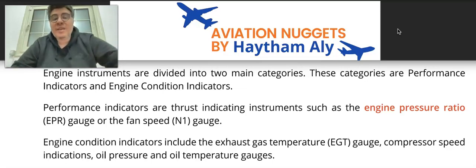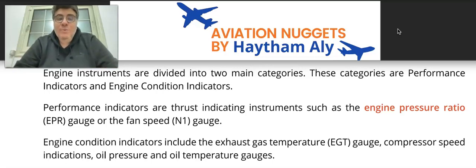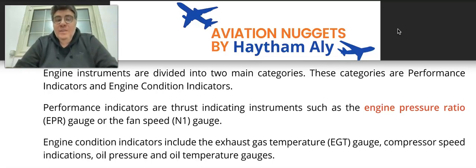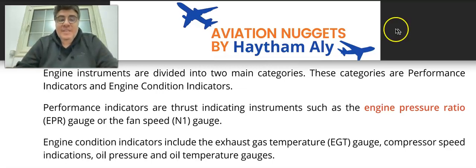In case of EPR failure, we revert to N1 mode. Examples: the V2500 engine uses EPR as the primary control engine parameter, while on the CFM engine we have N1 as the primary control parameter or primary engine indication parameter.